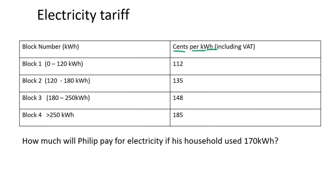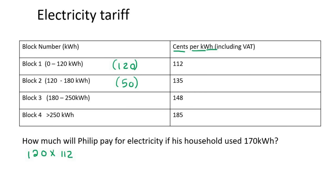How much will Philip pay if his household uses 170 kilowatt hours? 170 is in the second block, but we start at block one: 0 to 120 uses all 120. Then we only use 50 in the second block so the total is 170. So: 120 multiplied by 112 cents, and this already includes VAT so we leave it as is. Then 50 multiplied by 135 cents. The first gives 13,440 cents and the second gives 6,750 cents.